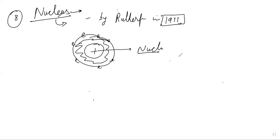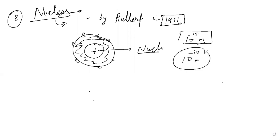The size of the nucleus is 10 to the power minus 15 meters, while the size of the atom is 10 to the power minus 10 meters — so the nucleus is much smaller than the atom. In this chapter, we will study the constituents of the nucleus, the forces between them, the density of the nucleus, and atomic masses with different units.